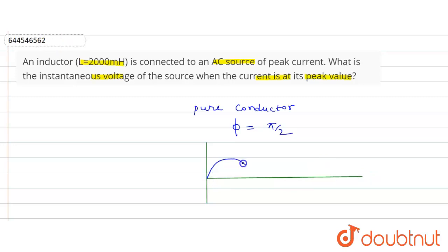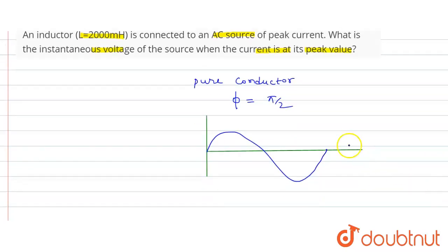Let's assume this is the current graph. Here this is the current graph for I, and when we draw a graph here